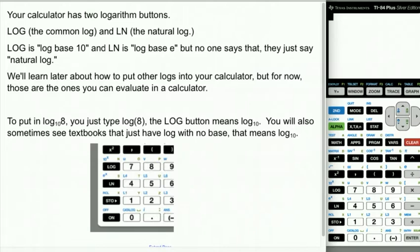The calculator has two logarithm buttons. The log button, L-O-G, which means log base 10. This is called the common log. So the common log is log base 10. If you just write L-O-G with no base, you mean log base 10. The natural log, which is log base E, and we're going to learn how to deal with that soon. We learn about log base E in 6.6. This is called the natural log. We write it as L-N. It means log base E, but nobody ever writes it that way.